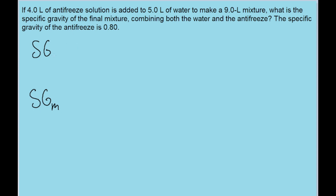The problem tells us that the specific gravity of antifreeze is equal to 0.8. Now remember, the specific gravity is equal to the density of a thing divided by the density of water — it's that ratio of something's density to the density of water. So the specific gravity of the mixture is the density of the mixture, rho sub m, over the density of water, rho sub w.